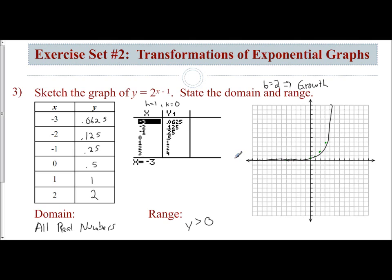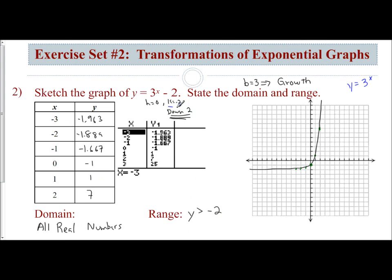So this is how you graph exponential growth functions. Rely on your calculator for table of values, plot them, but be able to examine your k value and use that to assist you with identifying your range. When k is 0, then y is going to be greater than 0. Here we have a k value of negative 2, and so our range changed to y is greater than negative 2.